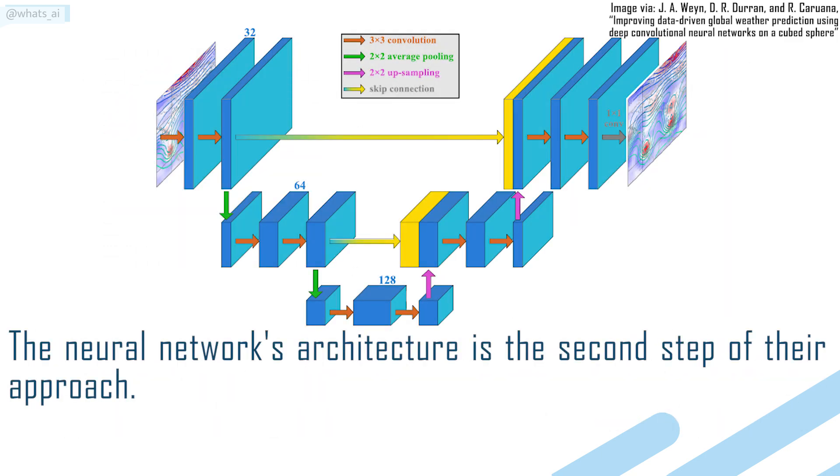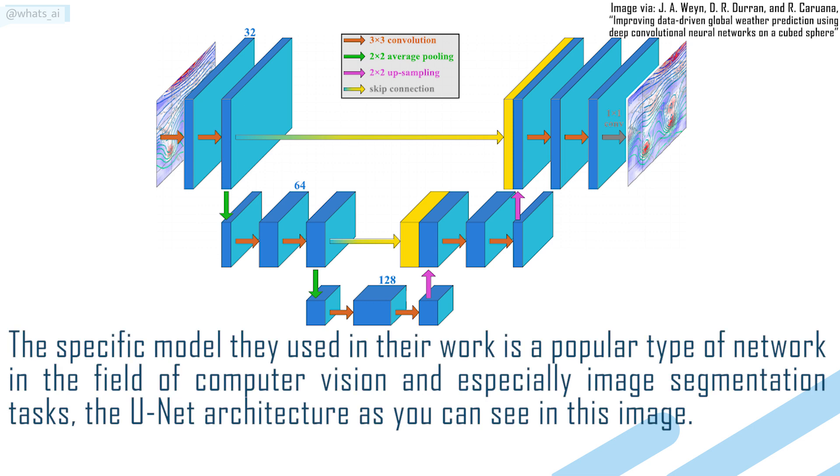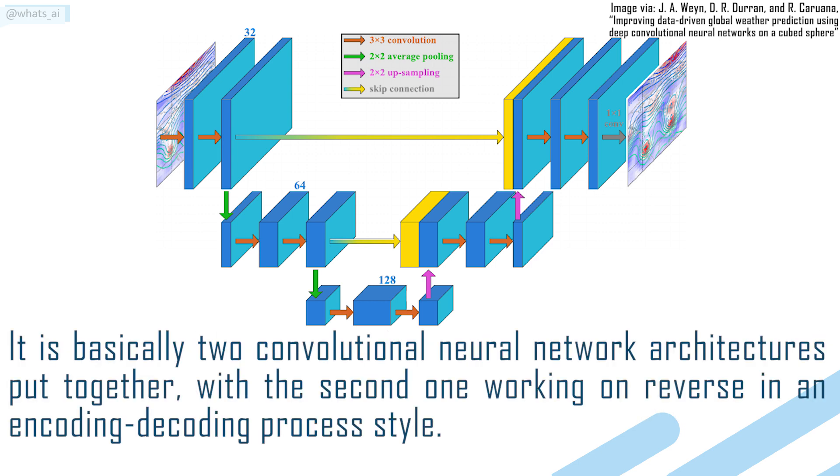The neural network architecture is the second step of their approach. The specific model they use in their work is a popular type of neural network in the field of computer vision, and especially image segmentation tasks, the UNET architecture, as you can see in this image. It is basically two convolutional neural network architectures put together, with the second one working in reverse in an encoding-decoding process style.